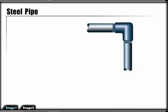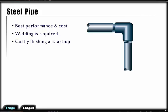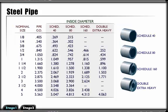Steel pipe is often a preferred conductor from the standpoint of performance and cost. However, it is often difficult to assemble because welding is required to give maximum leak protection. It also requires costly flushing to ensure a contaminant-free system at startup.